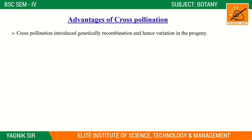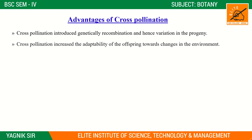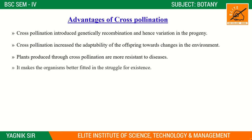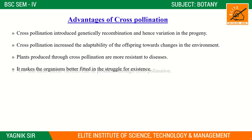Advantages of cross pollination: it introduces genetic recombination and hence variations in the progeny. Plant-to-plant variations are observed. Cross pollination increases the adaptability of offspring to changes in the environment. Plants produced through cross pollination are more resistant to diseases.